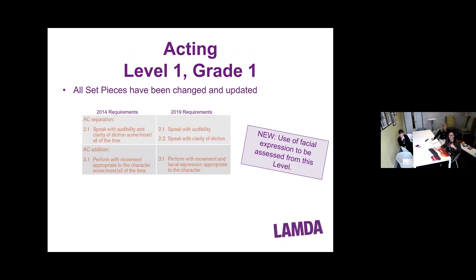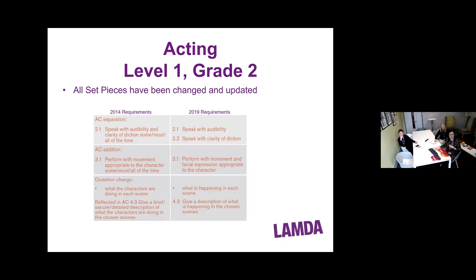For Grade 1 acting, the use of facial expression has been added to be assessed, reflected in the wording. As a reminder, from Grade 1 to Grade 5, learners can enter for a solo examination, a duo examination, or a combined examination. For Grade 2, there's further separation of the current 2.1, facial expression has been brought in, and the knowledge question has changed: learners are now asked 'what is happening in each scene' rather than 'what the characters are doing in each scene.'